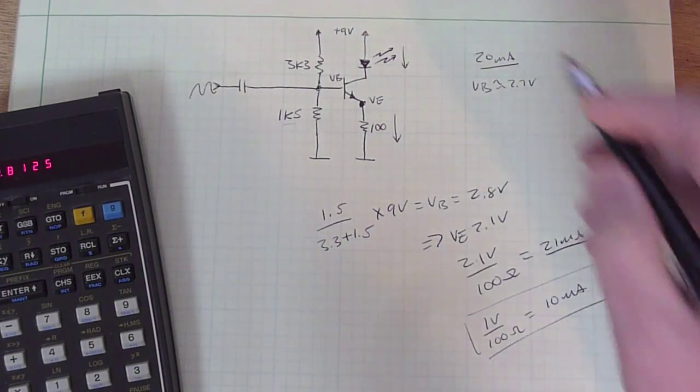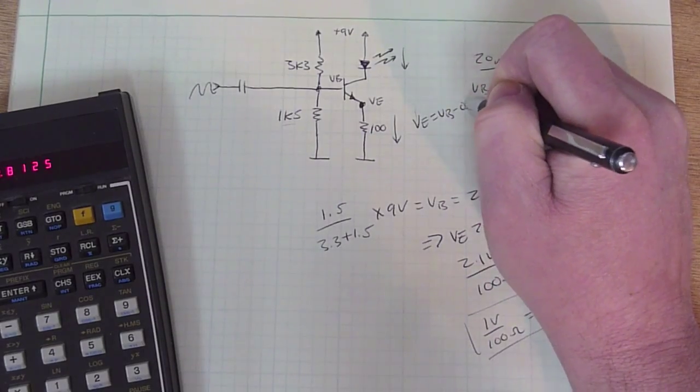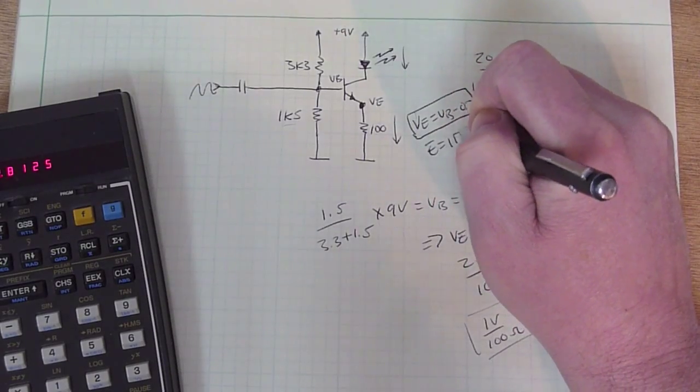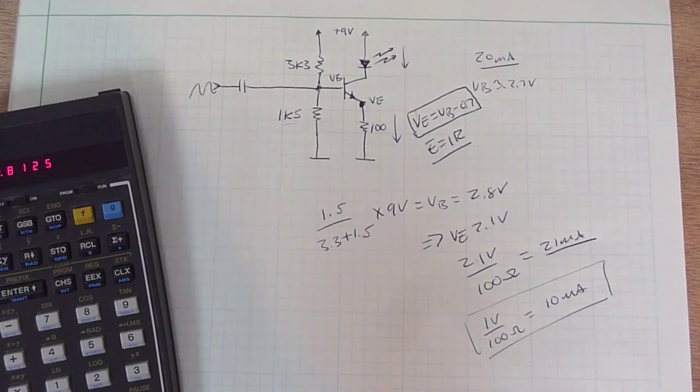Anyway, all you really need to know is that VE equals VB minus 0.7. If you know that and you know Ohm's law, E equals IR, you know everything you need to know to design current drivers to drive LEDs.